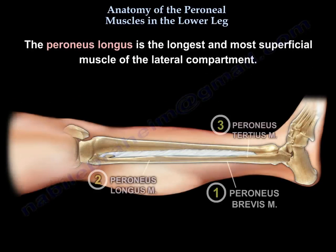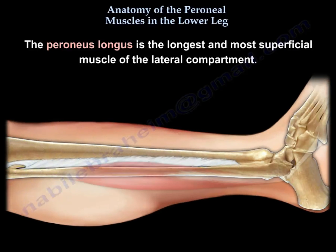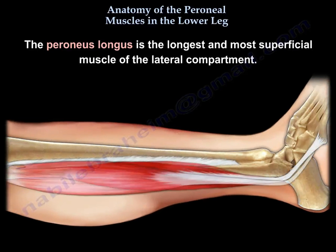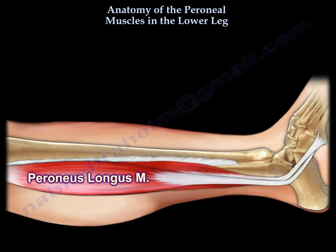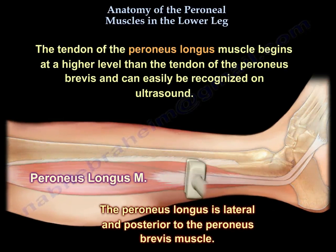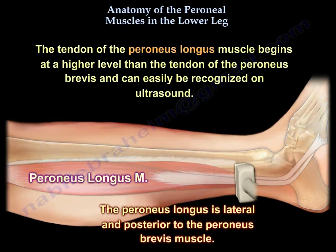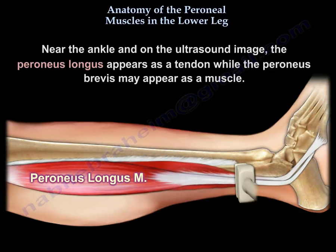The perineus longus is the longest and the most superficial muscle of the lateral compartment. The tendon of the perineus longus muscle begins at a higher level than the tendon of the perineus brevis and can easily be recognized on ultrasound around the ankle area. The perineus longus is lateral and posterior to the perineus brevis muscle. Near the ankle on the ultrasound image, the perineus longus appears as a tendon, while the perineus brevis may appear as a muscle.